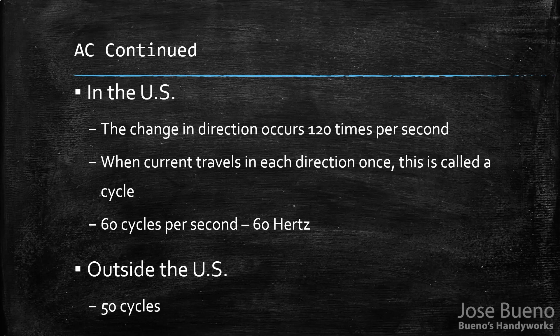In the welding world, you'll sometimes hear someone talk about what Hertz they set their machine to — they're basically saying how many times per second they want the current to change direction to achieve certain characteristics of the welding arc. Normally when using AC you're welding on aluminum, but we won't cover that in this intro course.